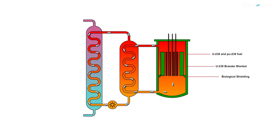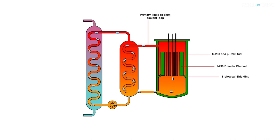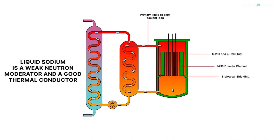Unlike other conventional reactors that use water as a coolant, liquid metal fast breeder reactors use liquid sodium as a coolant. Liquid sodium is used because it does not absorb neutrons as much as water and is also a good thermal conductor.